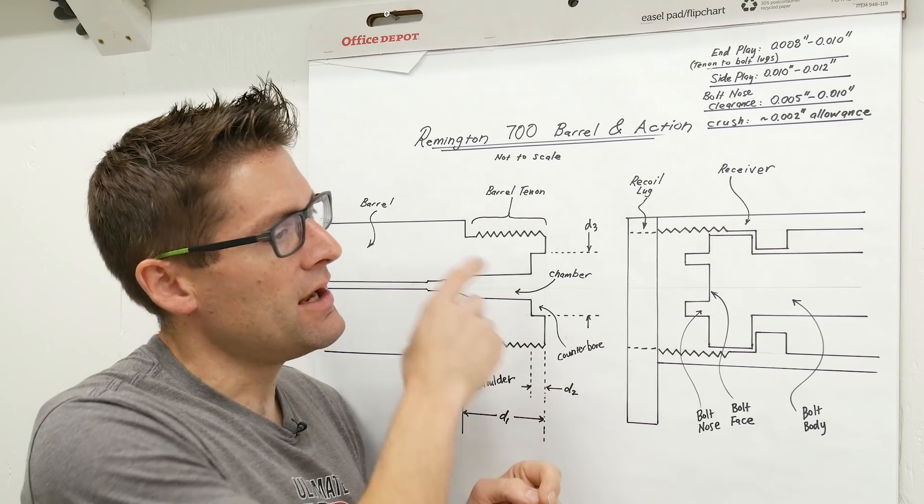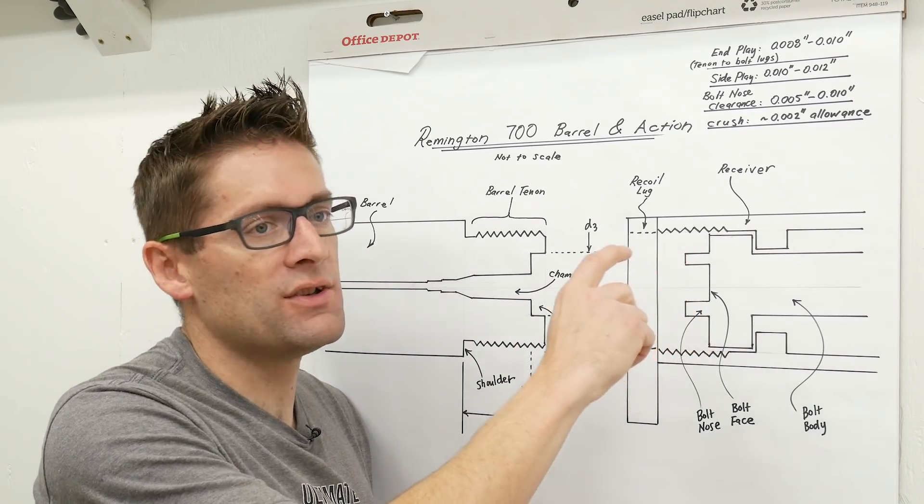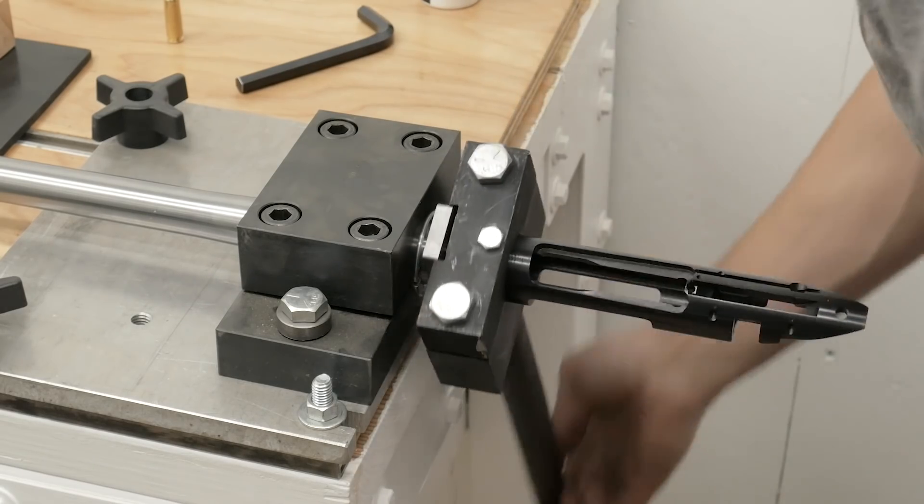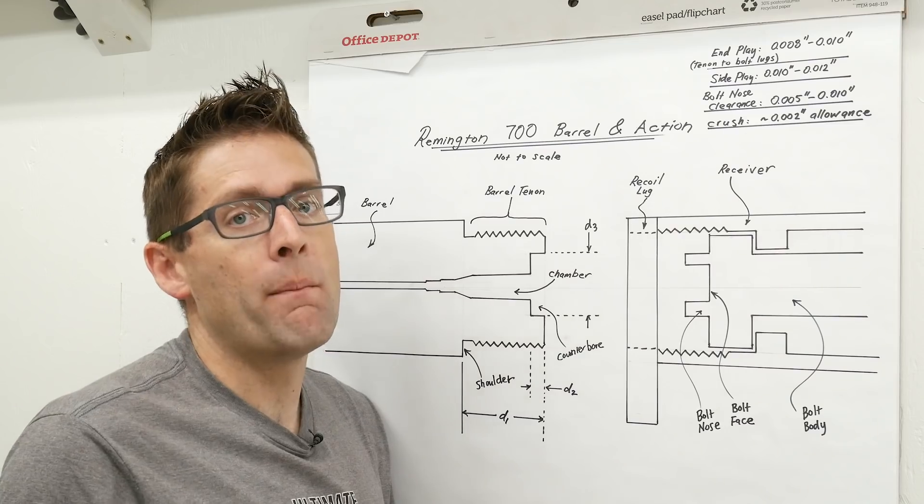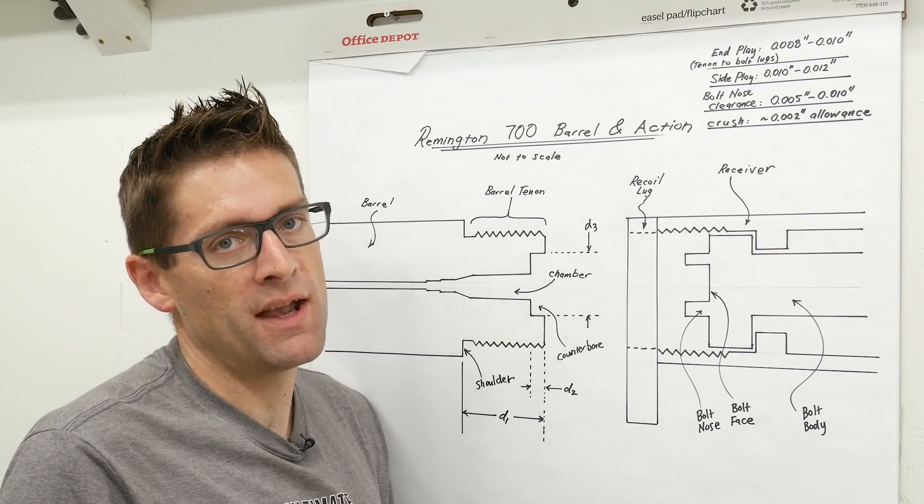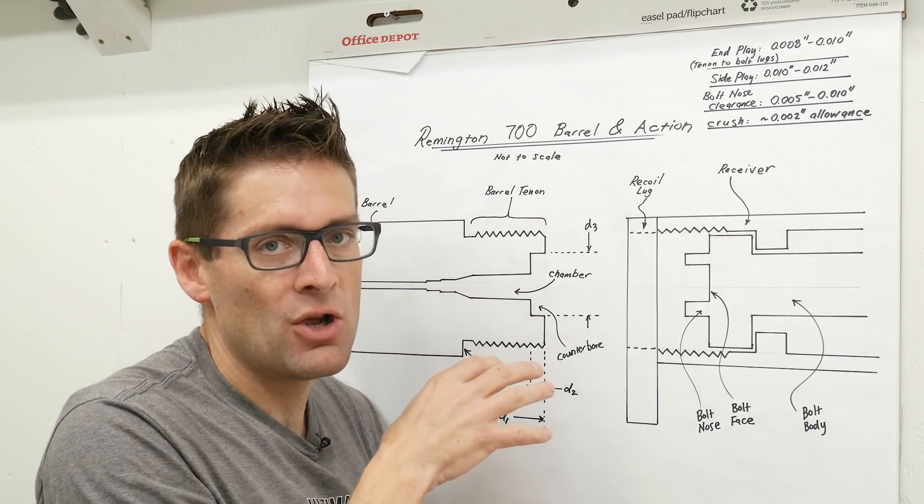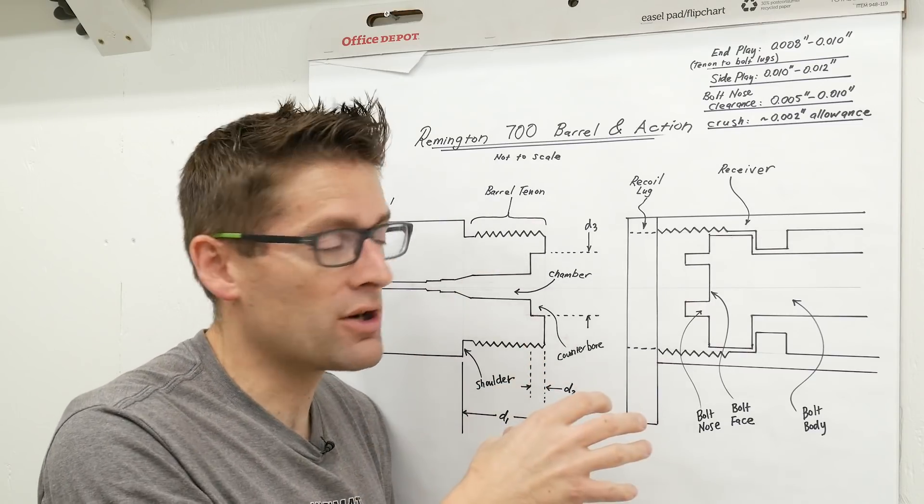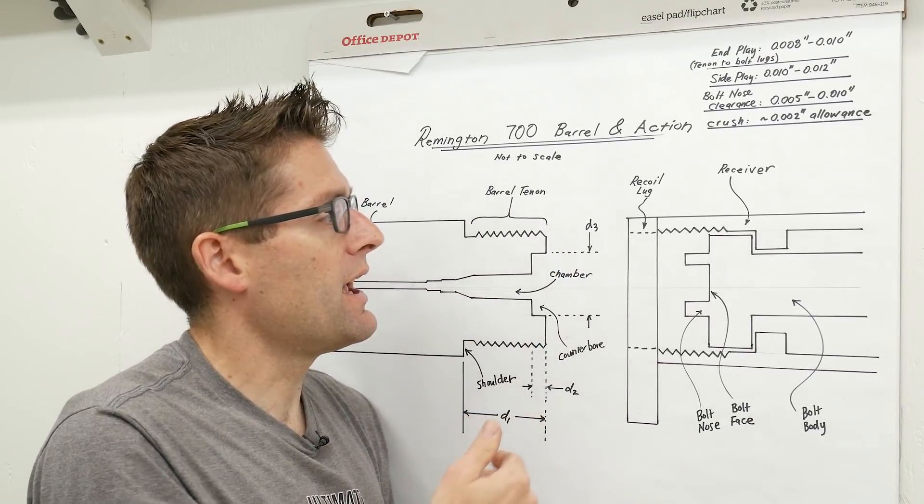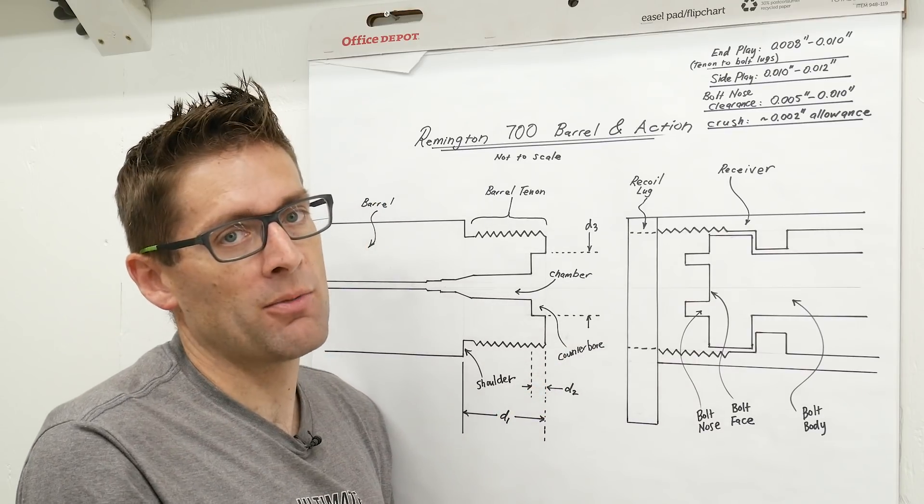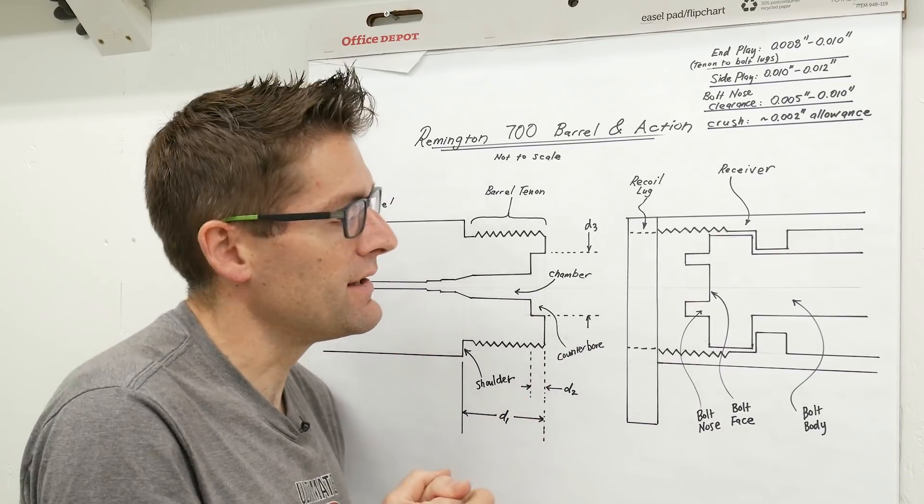I will note that when we screw the barrel into the receiver and we torque it down, everything is going to get compressed a little bit, about two thousandths of an inch. That's another key consideration when we're calculating what are we going to turn the tenon to and how deep are we going to cut the chamber. You got to know what that crush factor is.